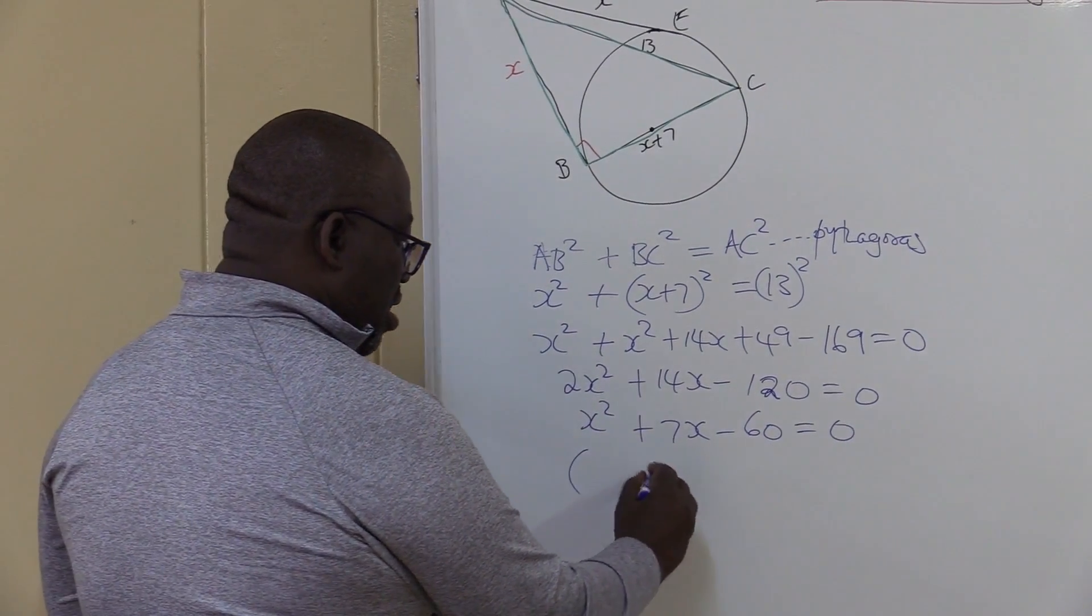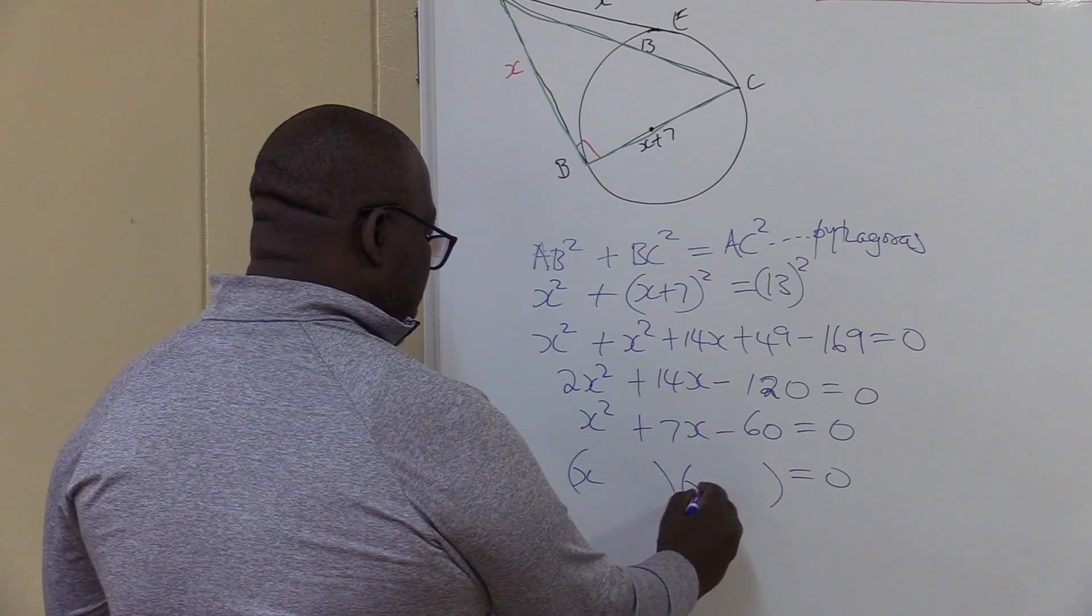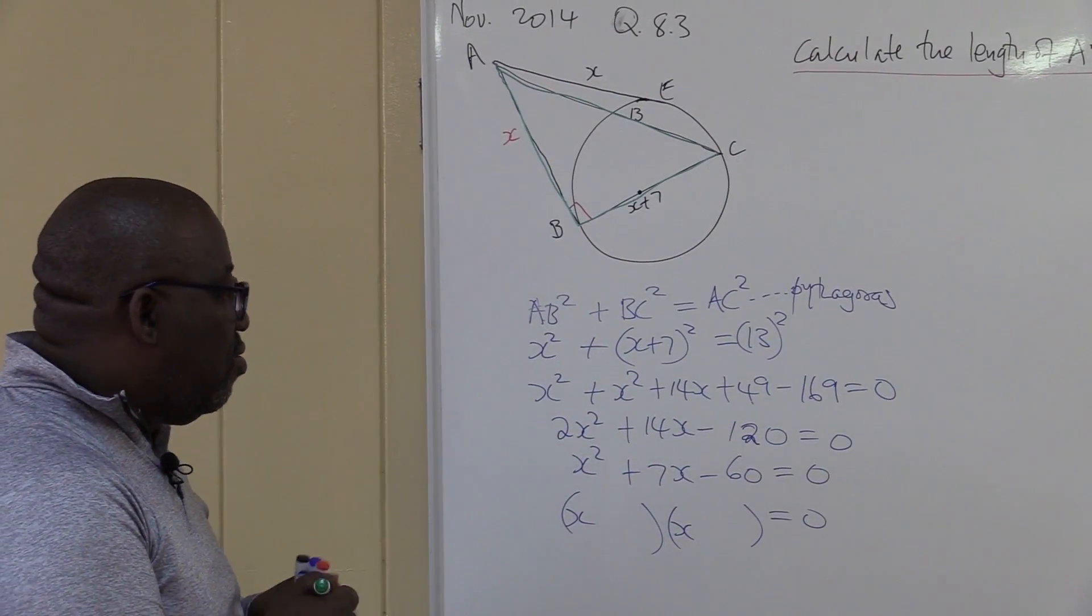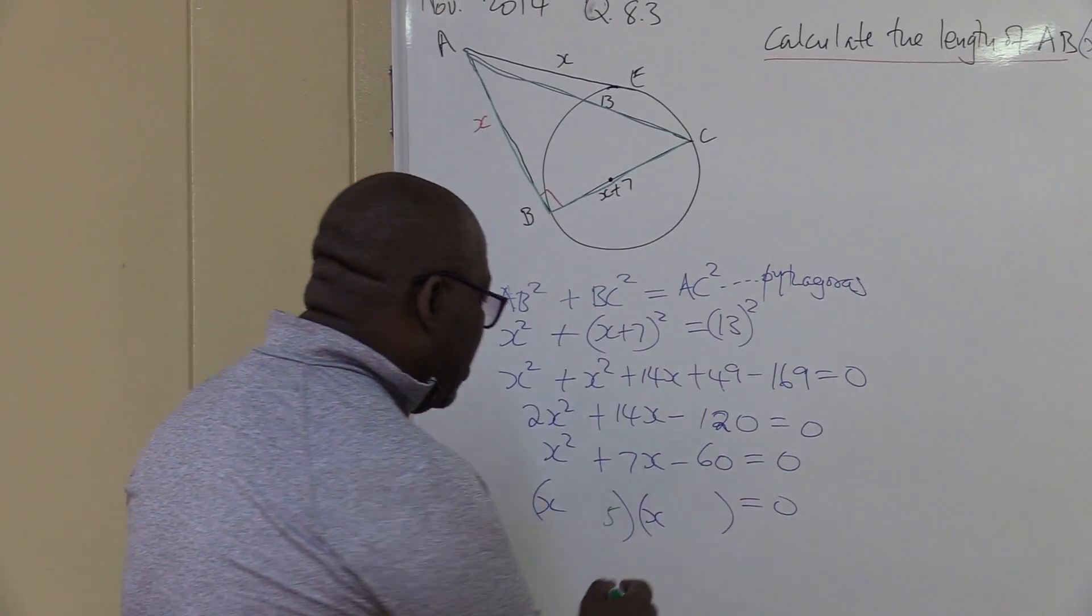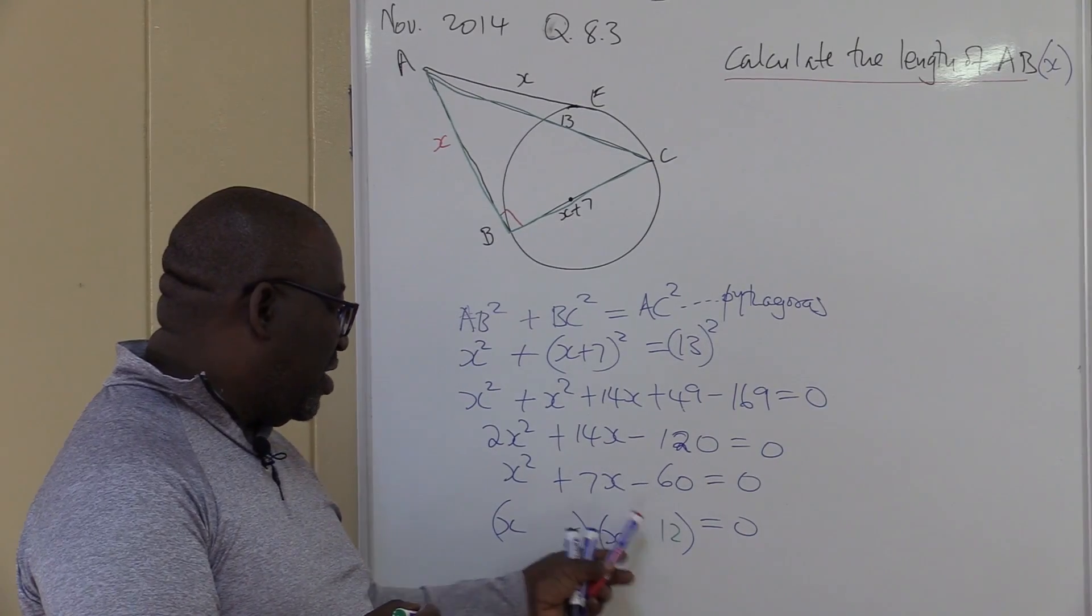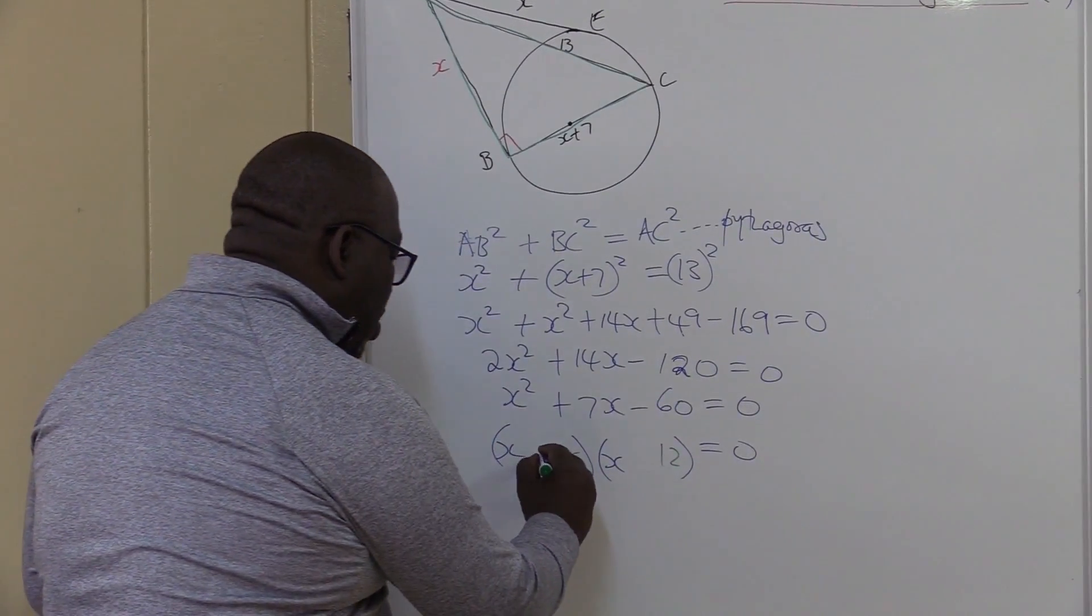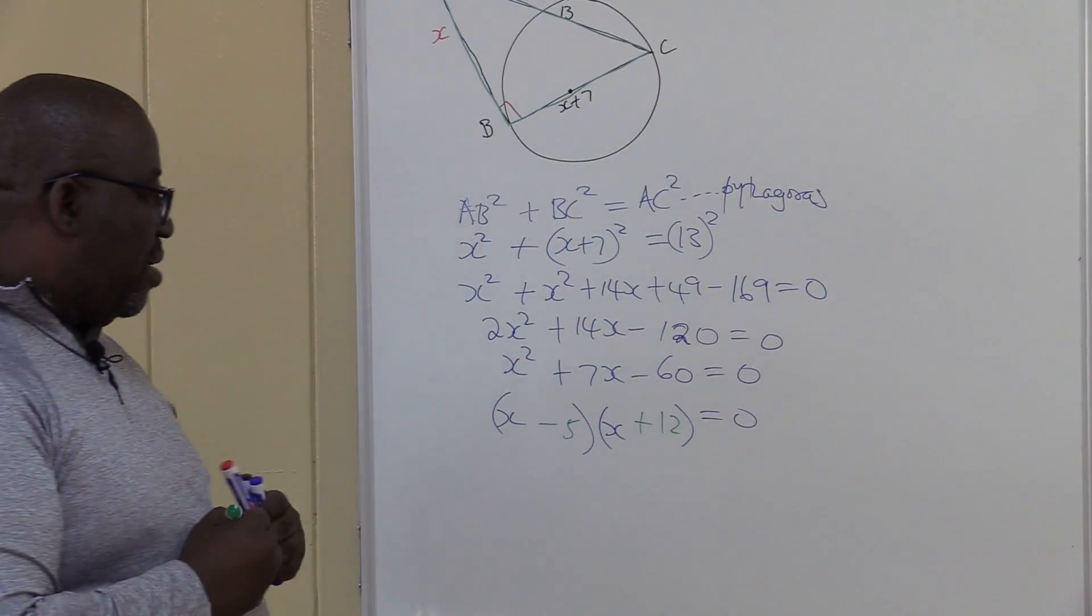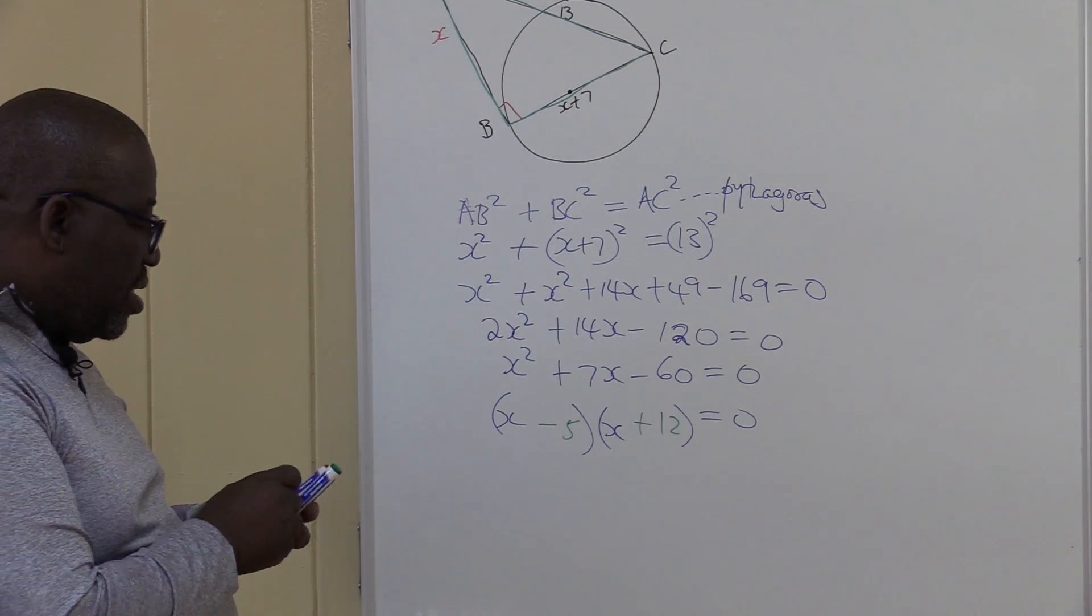This is equals to 0. From here, you factorize. You open two sets of brackets equal to 0. You've got X and X. You are looking for factors of 60 that will give us 7. We set those are 5. 5 and what? That will give us 7. It's 5 and 12. If you add or subtract these two, we must get 7. So how do I get 7? If 12 is positive and 5 is negative, that's where we'll be able to get this 7. So this must be positive. The bigger number will take the sign of the middle term. That's what we have.